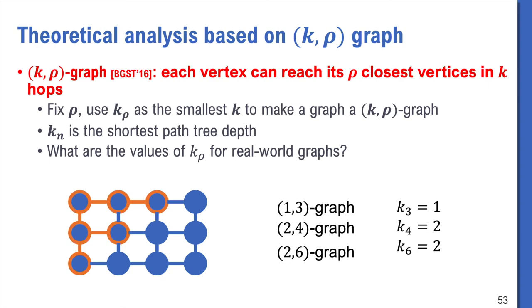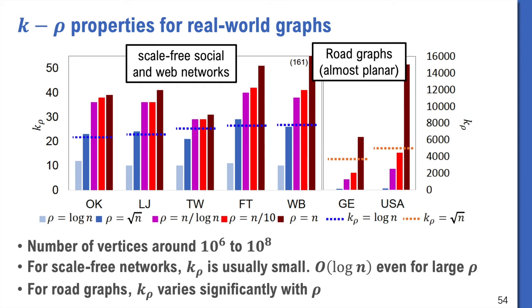Then the question is what is the k-rho properties of real-world graphs? We tested it on 7 real-world graphs. We found that for scale-free social and web networks, the growth of k-rho is extremely slow. You can assume it is order of log n even for large rho. For road networks, then k-rho goes fast and the shortest path tree is deep. So it is too pessimistic to always assume the worst case that the input graph is a chain. Since the real-world graph is not always the worst, and graphs with different k-rho properties should have different behavior in the stepping algorithms.